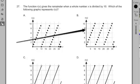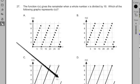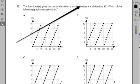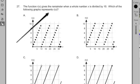Right away I'm seeing it involves graphing, not just any old graphing, graphing on an x and y axis. So I'm going to be thinking algebra. Now it says here 27, the function r(x) gives the remainder when a whole number x is divided by 10. Which of the following graphs represents r(x)?